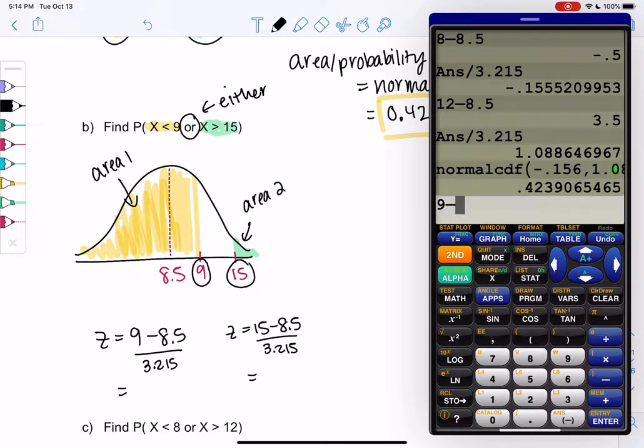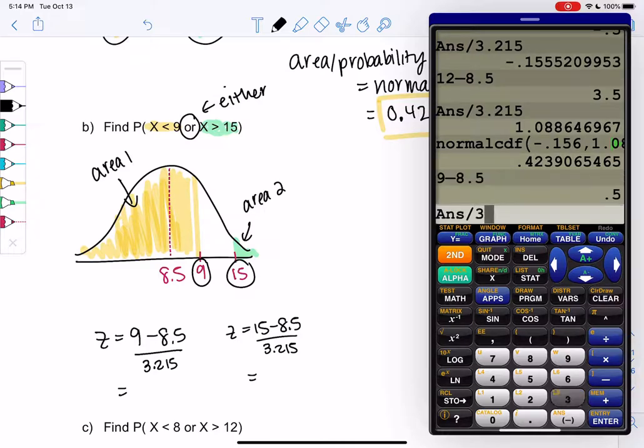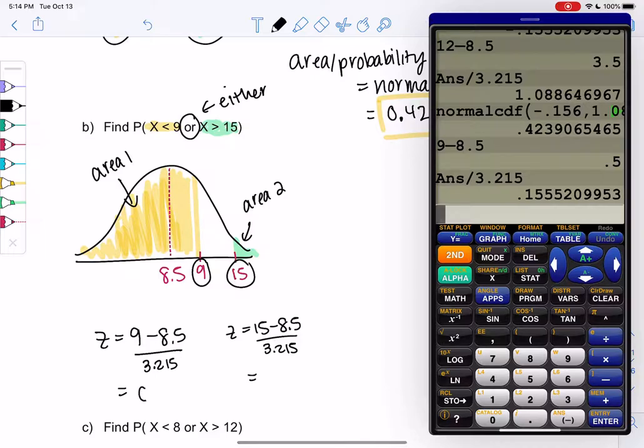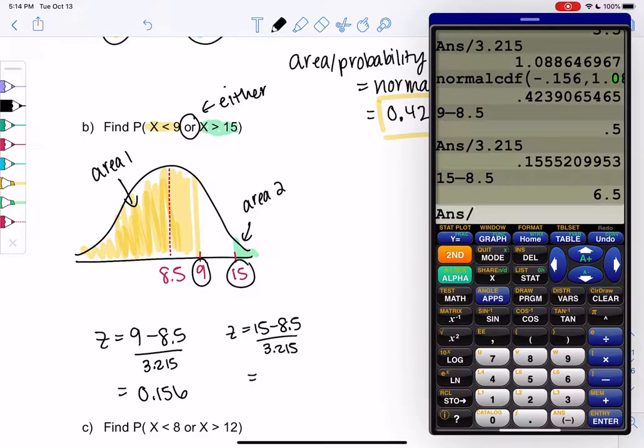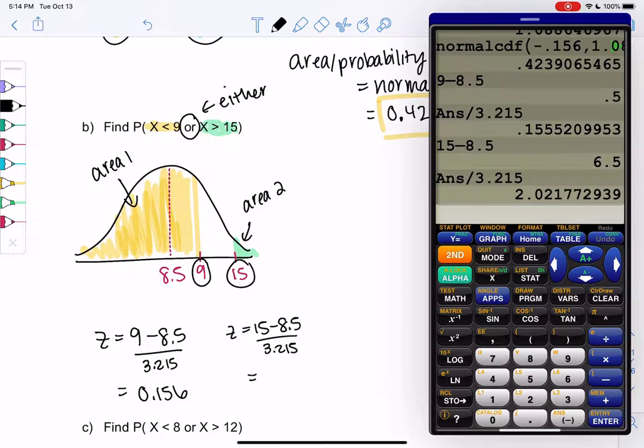So for 9 minus 8.5 divide by 3.215, we get a z-score of 0.156. And then for 15 we get 15 minus 8.5 divide by standard deviation, 3.215. And we get a z-score of 2.022.